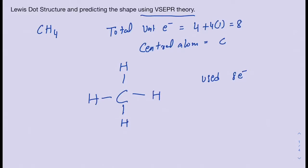Before you finalize your Lewis structure, make sure everyone is happy in terms of the octet rule. Hydrogen needs only two electrons, and a single bond to hydrogen provides those two electrons, so hydrogen is good. Carbon has four bonds around it, giving it eight electrons, so the octet is completed and carbon is happy as well.